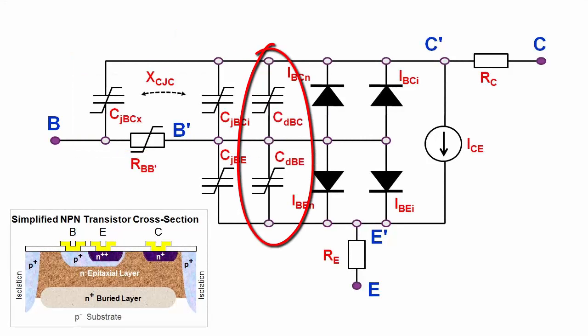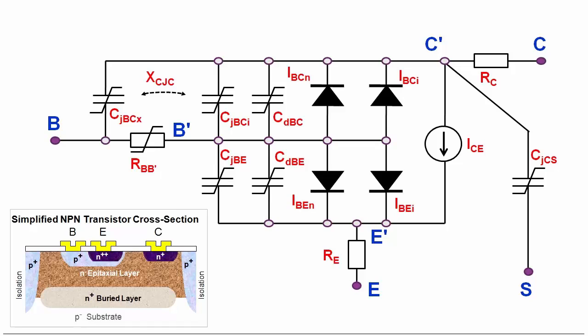The diode junction capacitances are indexed by J, like junction, whereas the base-collector capacitance can be distributed across the base resistance RBB to emulate the physical width of the base. The delay effect is covered by diffusion capacitors, denoted by the leading index D, like diffusion. The diffusion capacitor CDBE covers the forward transit time, and CDBC the reverse transit time. The Gummel-Poon model also features a fourth pin in the substrate, for the modeling of the collector substrate capacitance. The substrate DC current, however, is not included in the model.